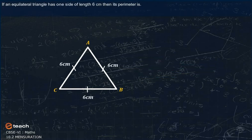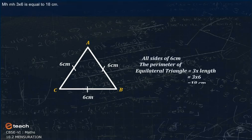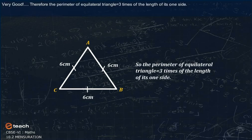If an equilateral triangle has one side of length 6 centimeter, then its perimeter is 3 into 6, equal to 18 centimeter. Very good. Therefore, the perimeter of an equilateral triangle is equal to three times the length of one side.